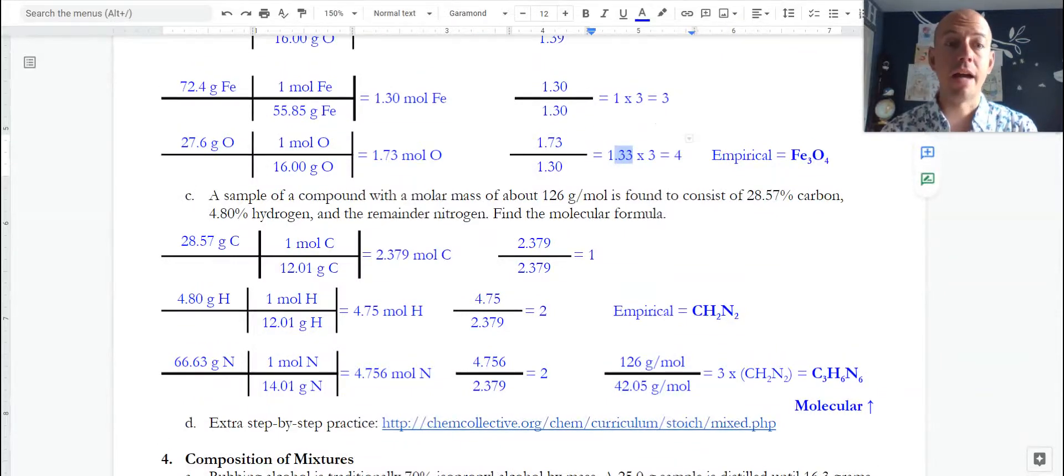The last sample that I've put together here goes through all the steps. We've got some carbon. We change that to moles. Some hydrogen, which we change to moles. The remainder nitrogen, so 100 minus 28 minus 5 gets me this. Divide. Now I've got some moles.